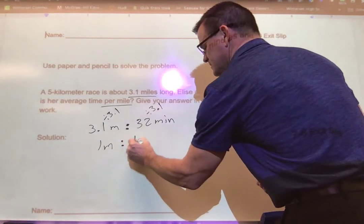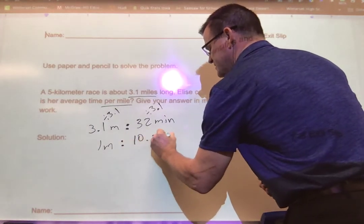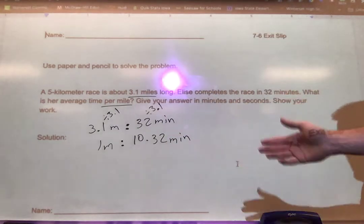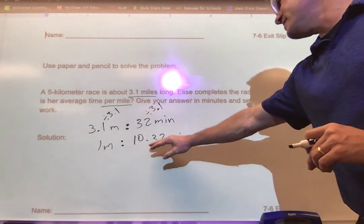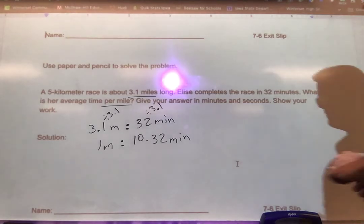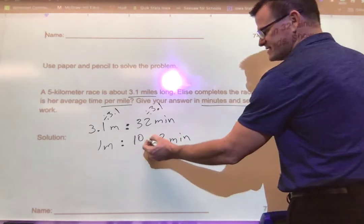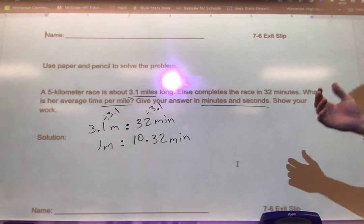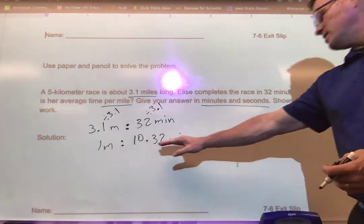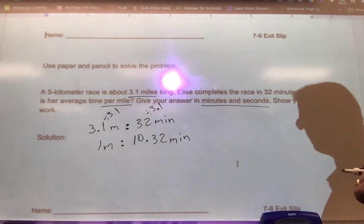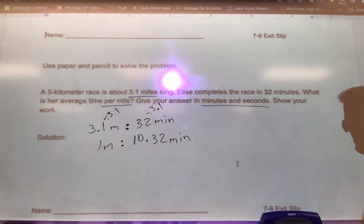If you take 32 divided by 3.1, you're going to get 10.32 minutes. Every mile is taking around 10 minutes and 0.32 minutes. This is where it gets a little tricky because we want the answer in minutes and seconds and right now it's all in minutes. A lot of people want to say well that's 32 seconds, well no.